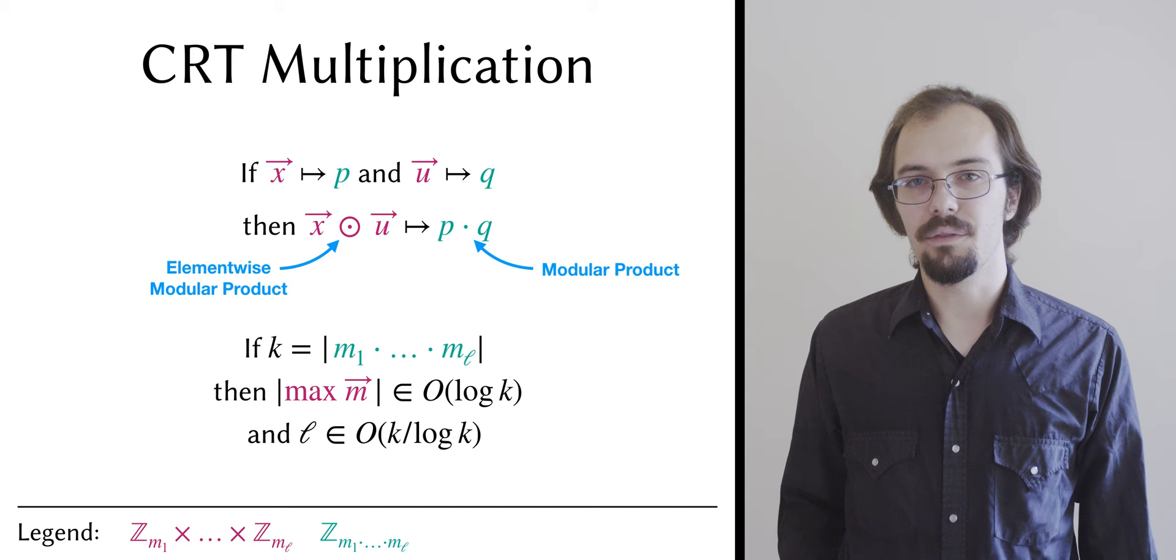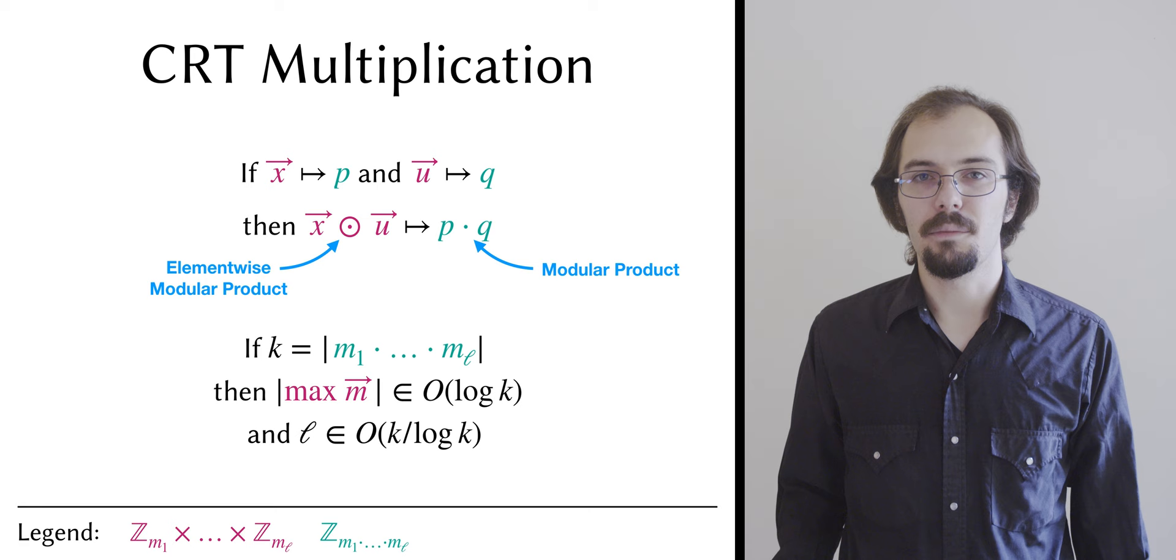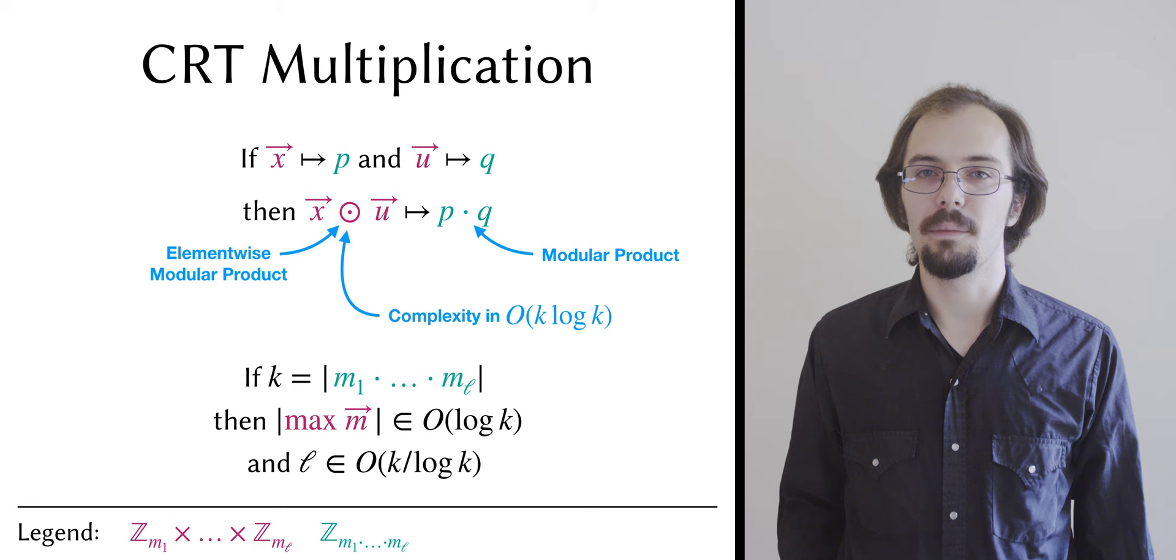Consequently, if our fundamental multiplication complexity is quadratic, then we can multiply two k-bit numbers in CRT form in complexity O of k log k, as opposed to O of k squared if we did it naively.